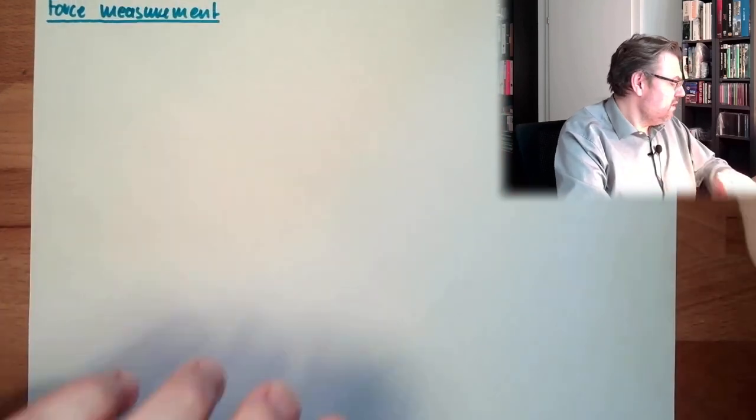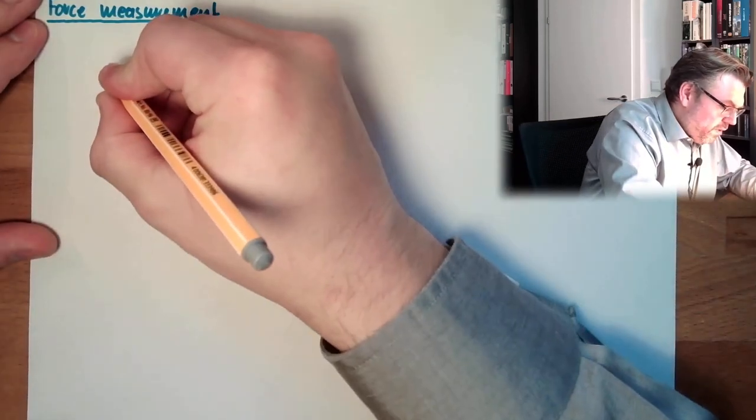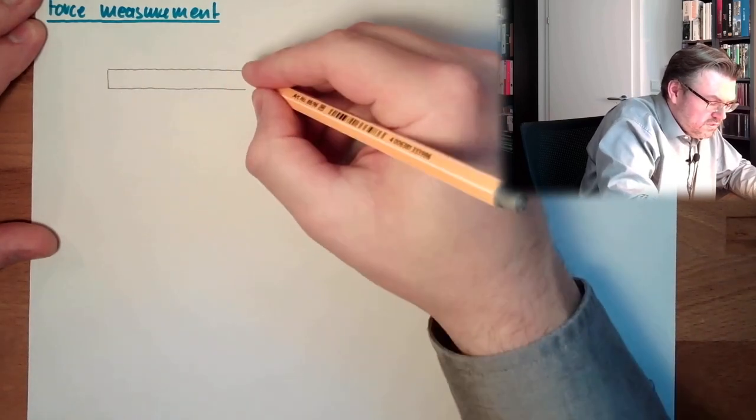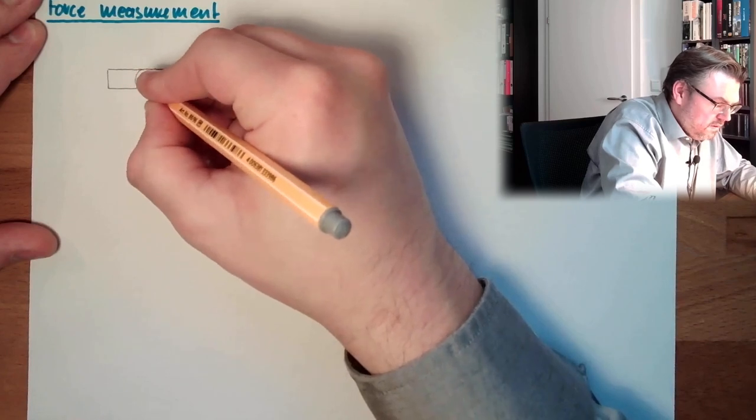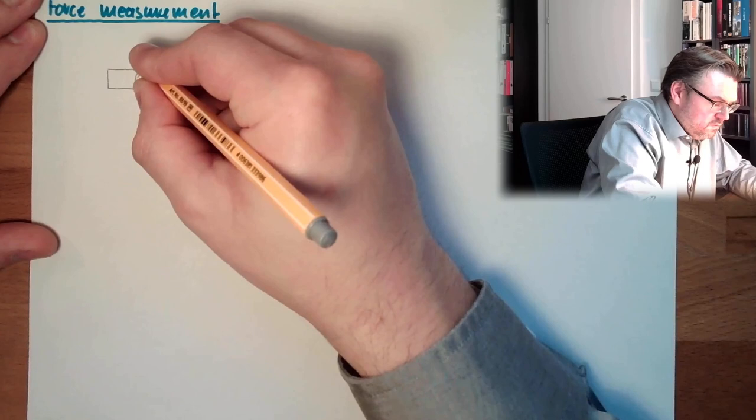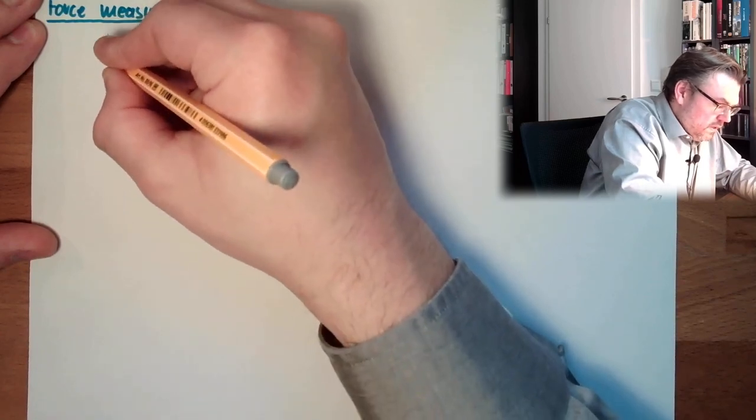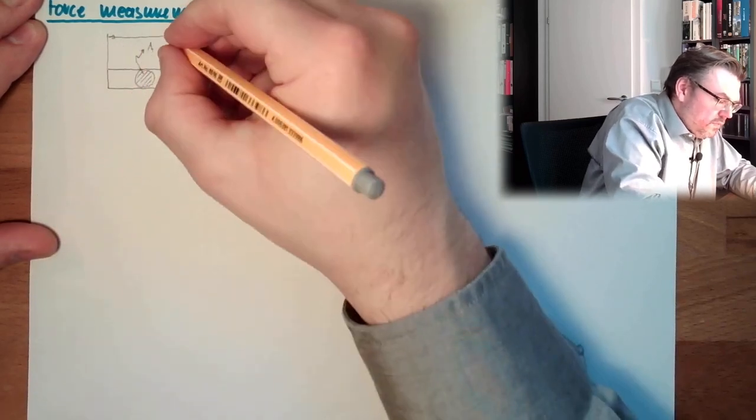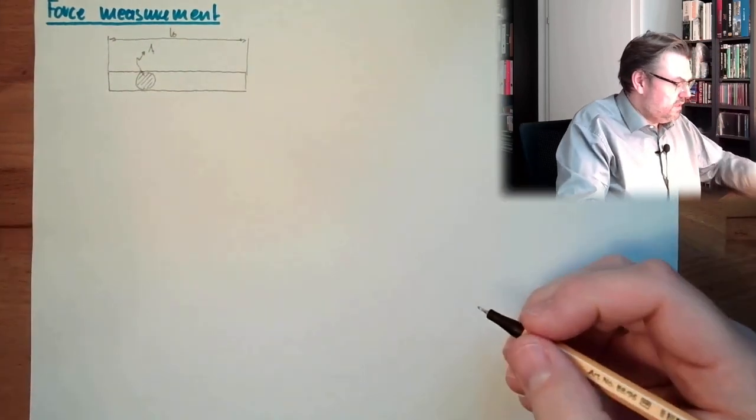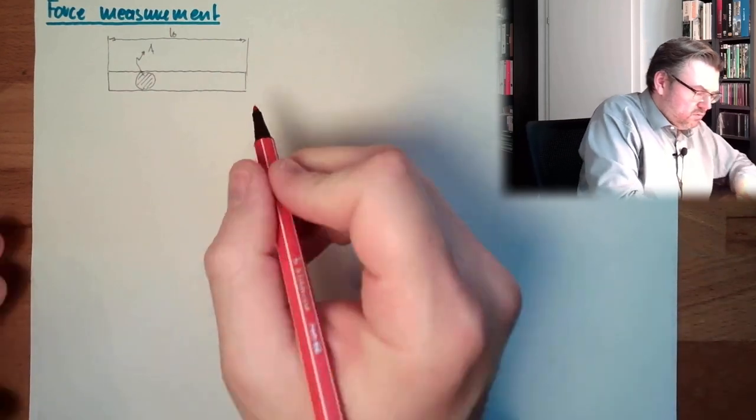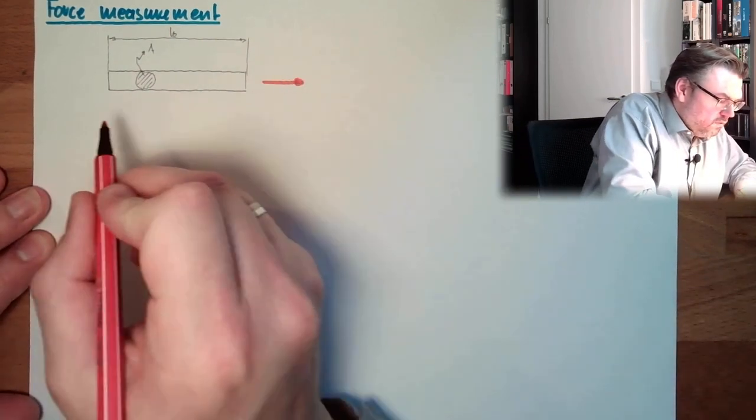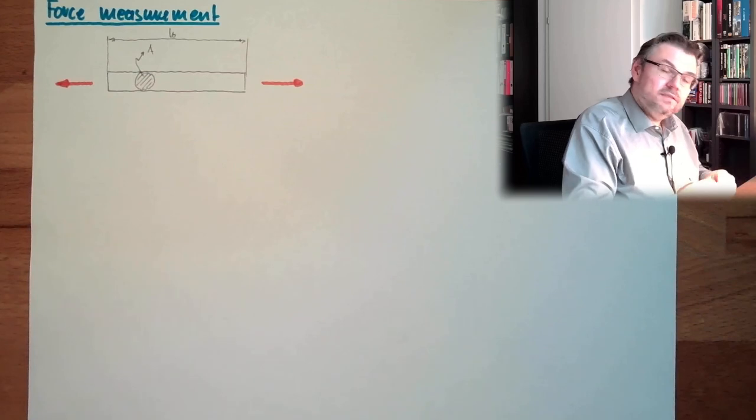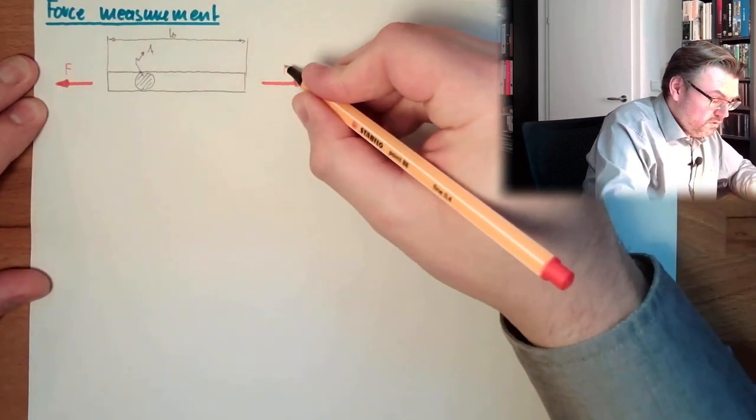So let's summarize those thoughts. Let's say we have some material. Here we have the material. Stick like this. It has a certain cross section A, length L0. This is the stick. And now I apply force to the stick. So here's the force. Of course, I have to draw it in both directions because it must be action, reaction. Force, force.